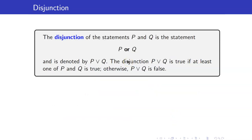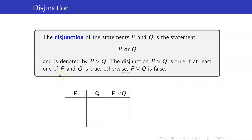Next, let's go to disjunctions. The disjunction of the statements P and Q is the statement 'P or Q,' denoted by the disjunction symbol. The disjunction P or Q is true if at least one of them is true — take note, you only need one of them to be true. Recall that 'at least' means you can have more than one. So how will the truth table look?